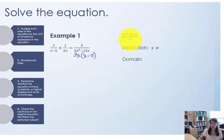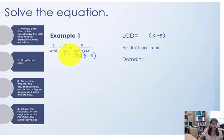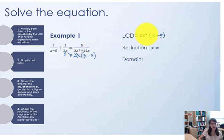To build our lowest common denominator, starting with the first denominator: the quantity (x minus 5) is a unique factor. From 2x we need 2 multiplied by x. In the last denominator we have 3x, so 3 is another unique factor, but (x minus 5) is already included. So we multiply 2 times x times 3, giving 6x times the quantity (x minus 5) as our lowest common denominator.